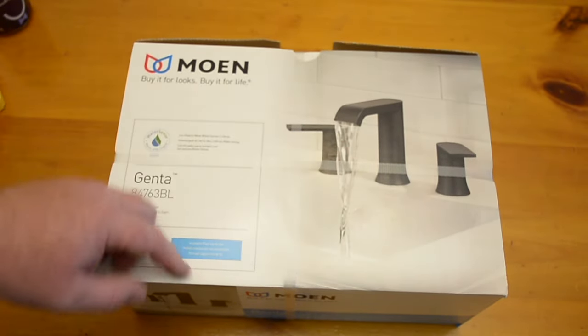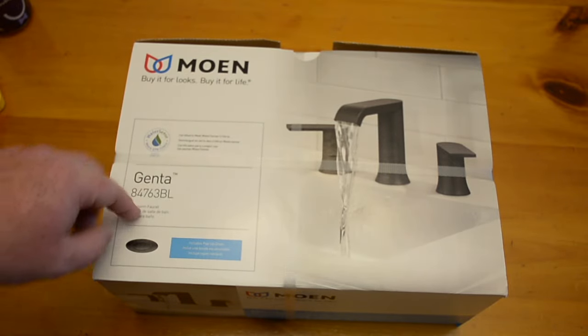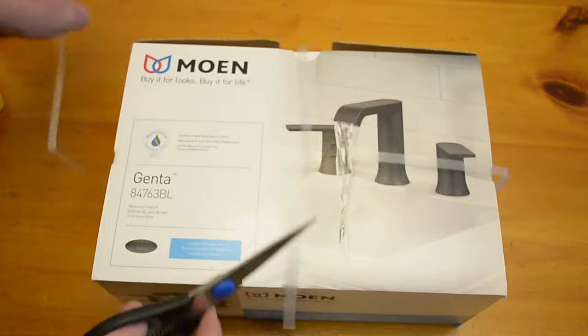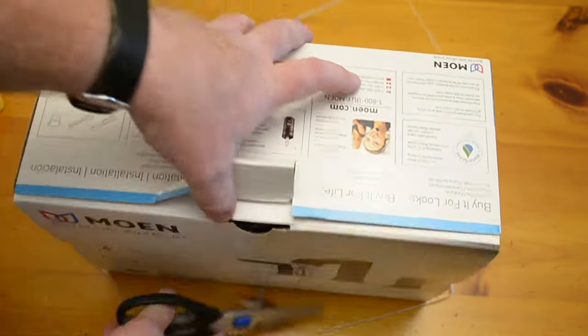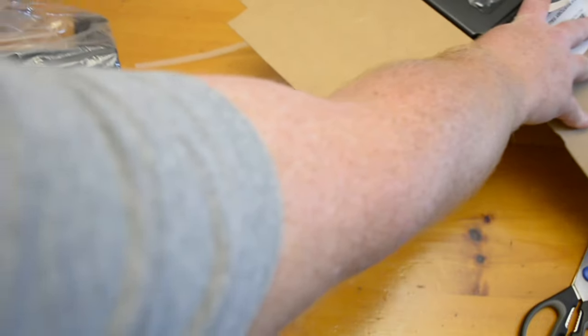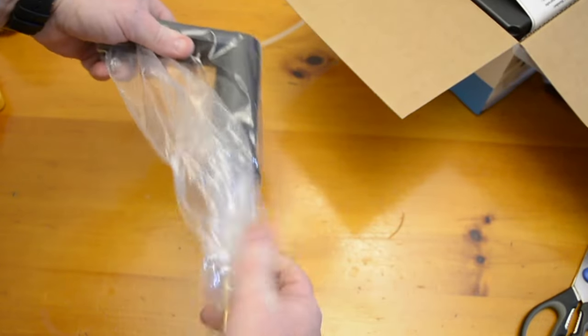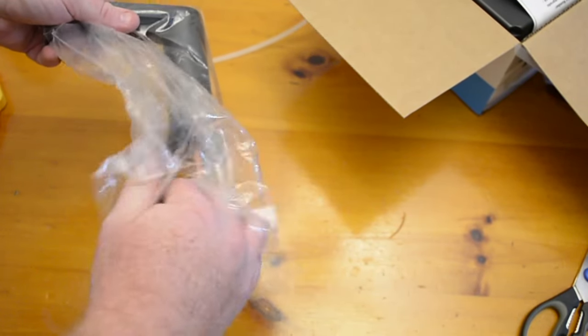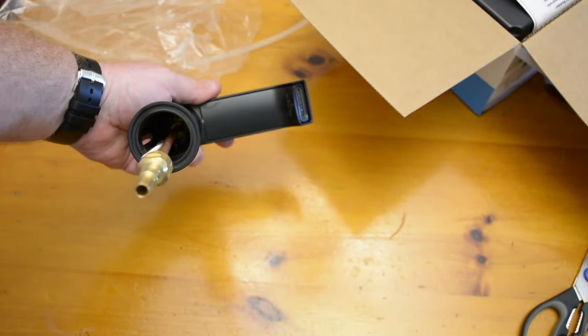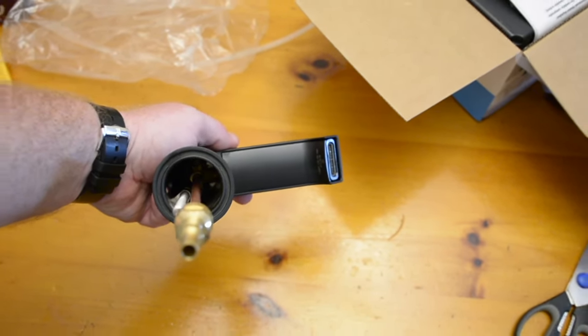Okay, so what we have here is a brand new one. It's called the Moen Genta, and I'll just show you quickly. It's probably easier to film it this way. Yeah, so here you go. Basically all you have to do is...